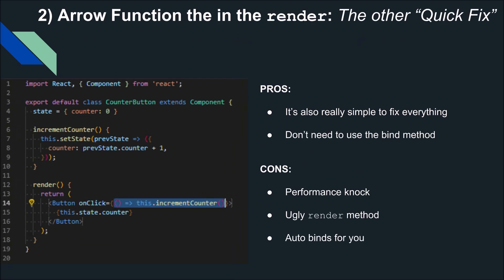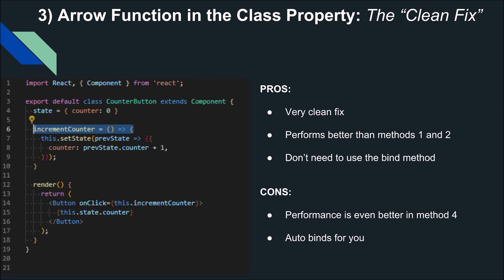Another quick fix is setting your arrow functions in the render. This is also not ideal because you're adding a function to your render, and again it's a performance hit — every time you re-render the counter button, you're recreating that function. It's clean and you don't have to use the bind method, but a downside is that it auto-binds things for you. About 95% of the time you do want to bind your functions, but those times you don't, it would be nice if things don't automatically bind.